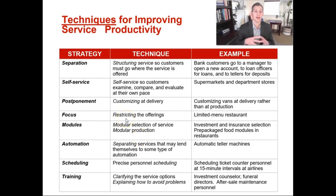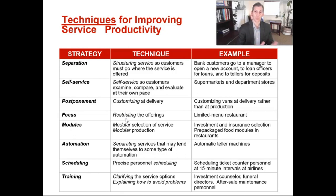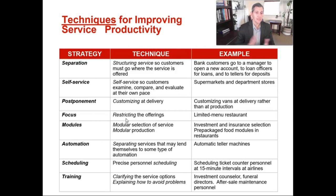Focus would be an example like a fast food restaurant — restricting the amount of offerings so employees are more productive because they're building a limited scope of products, whereas a full-service restaurant is less productive because there are more options. Another example is automation: separating services that lend themselves to some type of automation, like an ATM.